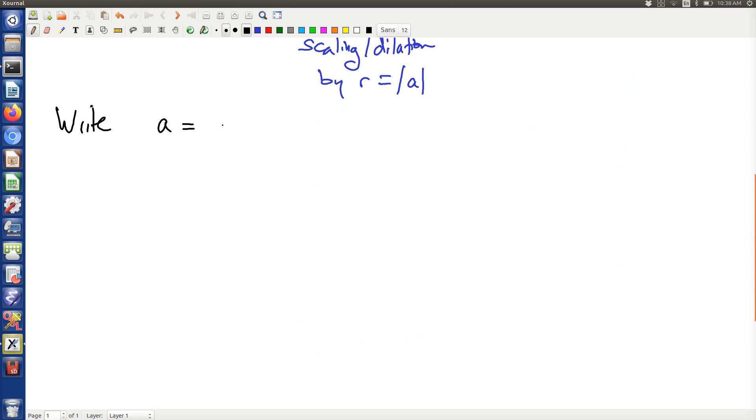Let's write A as C plus DI. Let's write Z as X plus IY. Then the product looks like the usual distribution rule.